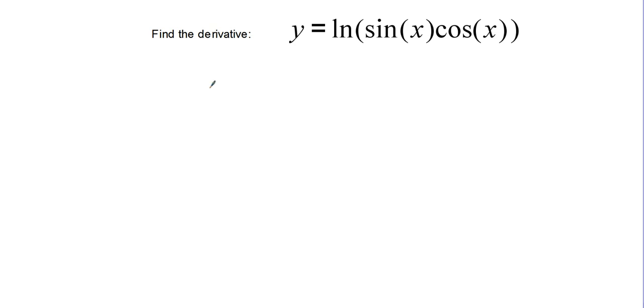In this last example, we'll use the same process. y equals the natural log of u, with u equal to sine x cosine x. Derivative of natural log of u is 1 over u, times the derivative of sine x cosine x, which can be found using the product rule.